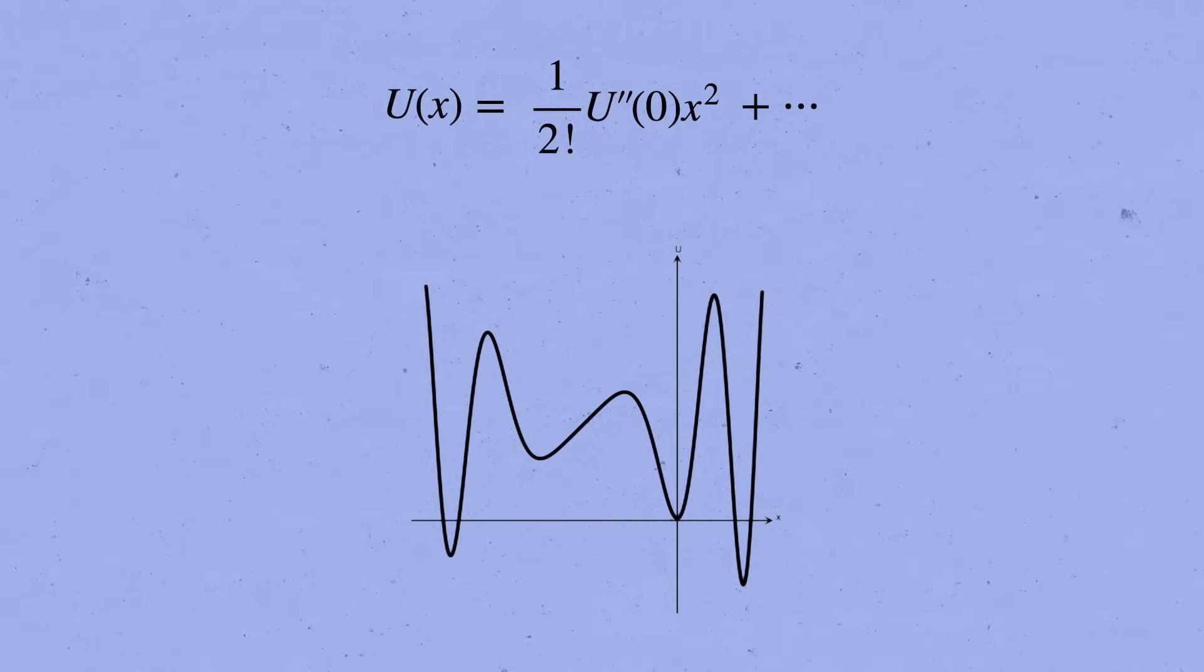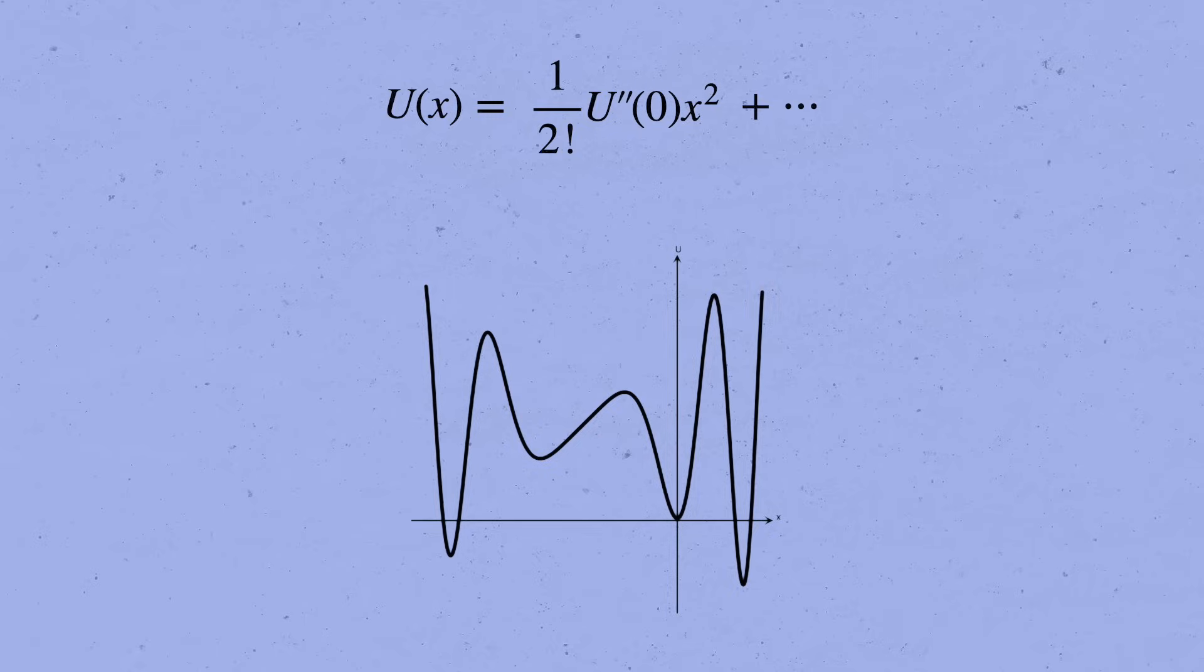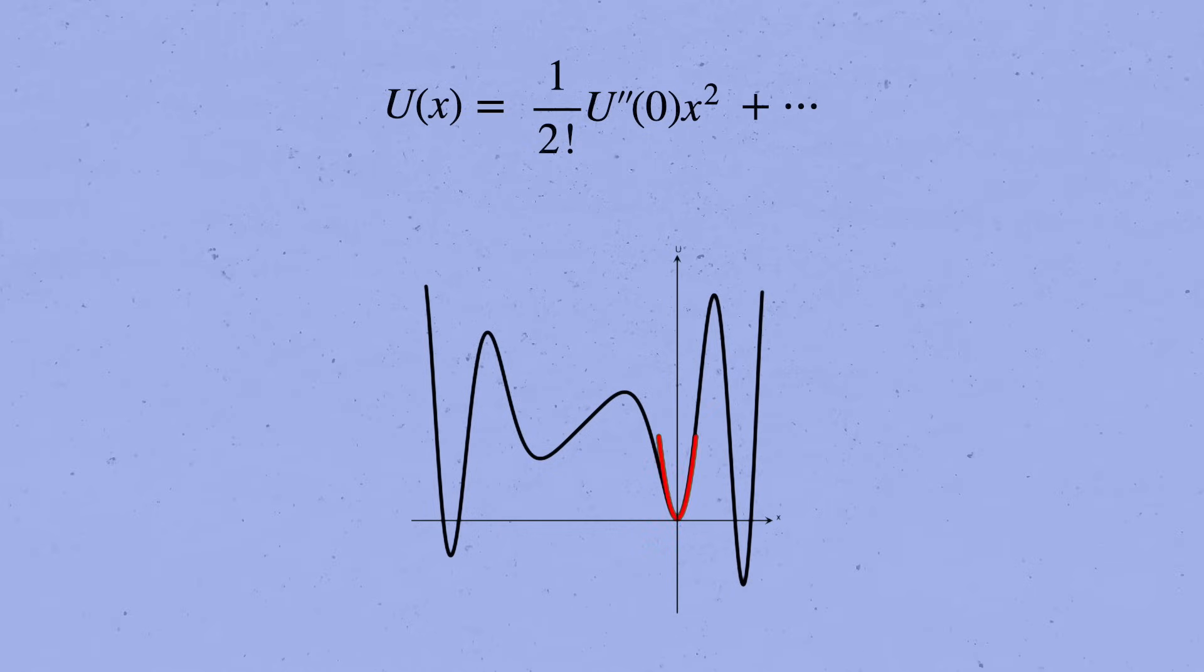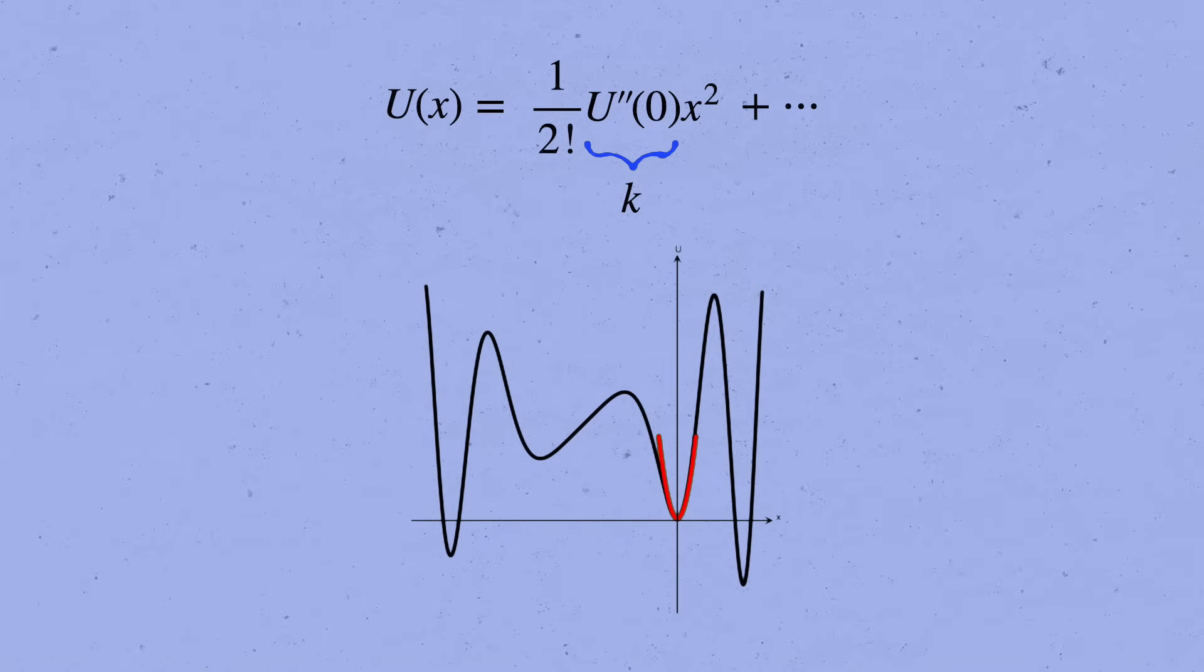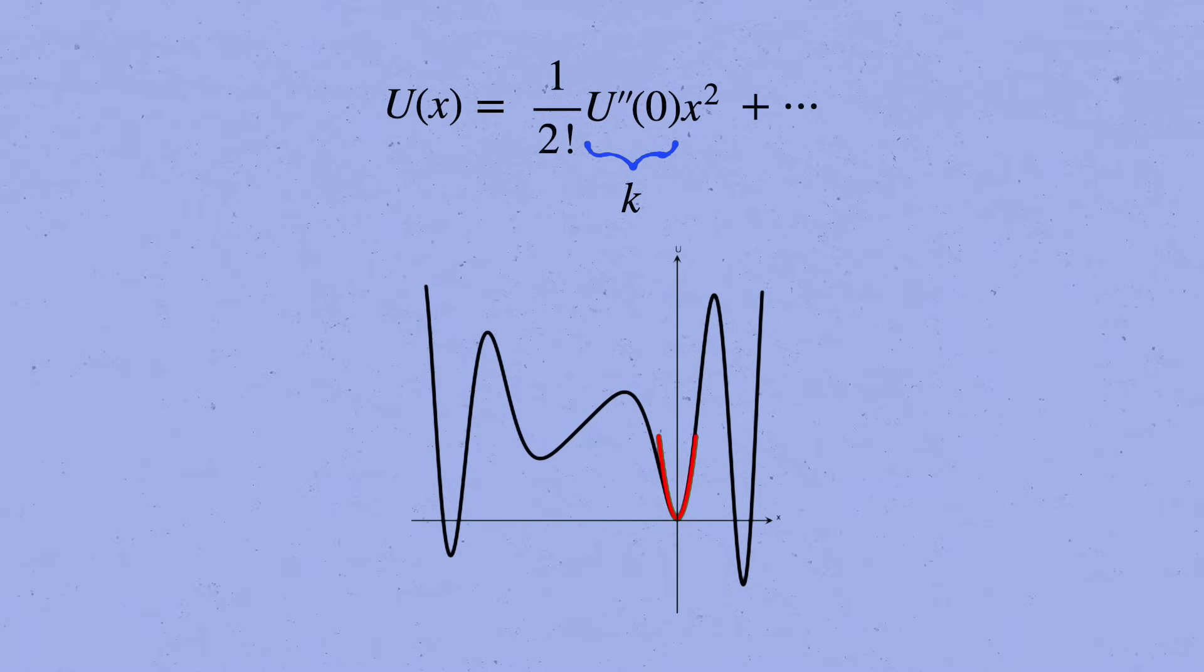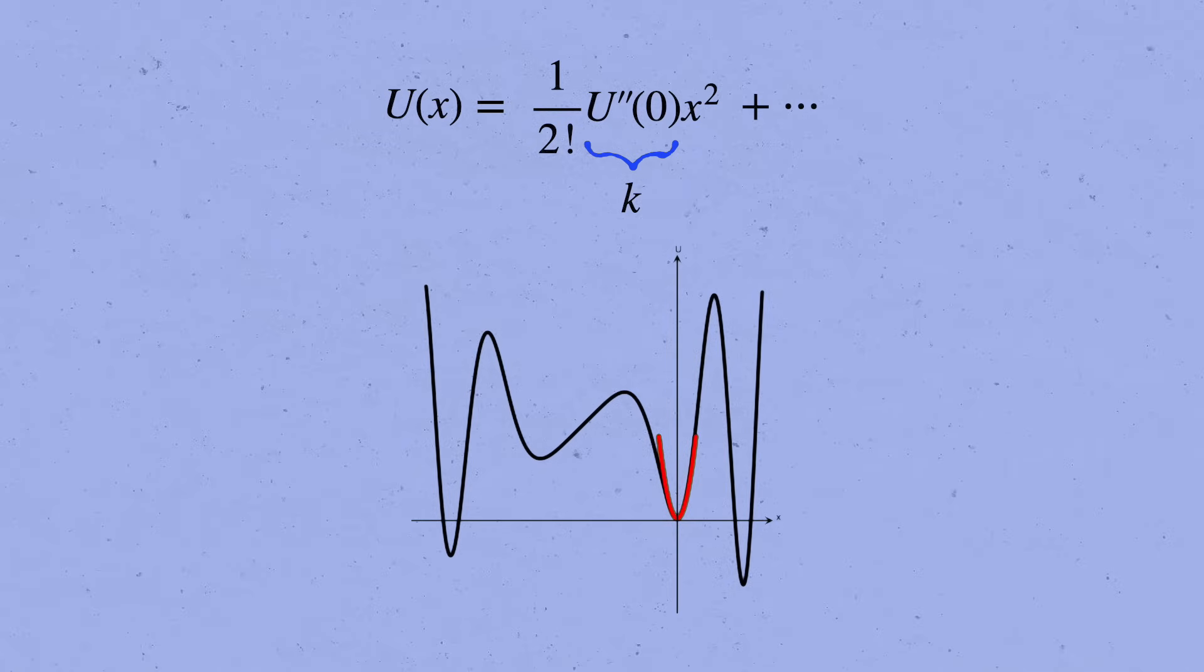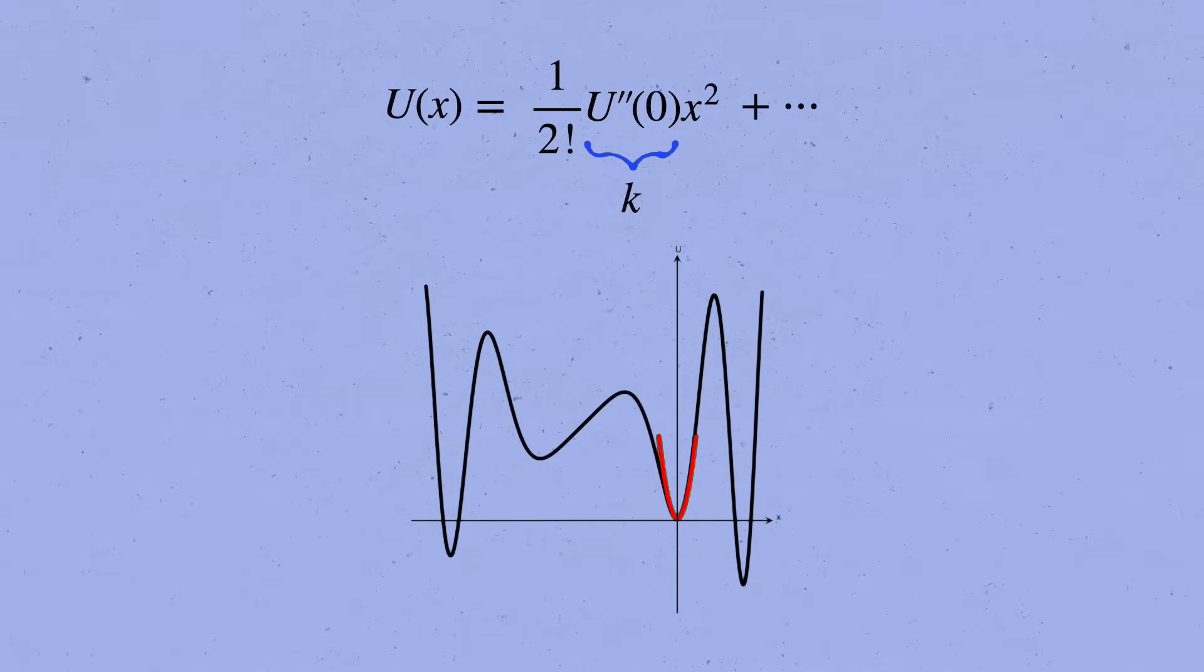u of x equals one-half times u double prime of zero x squared. But that's the potential energy of a spring, with spring constant k equals u double prime of zero. And that's the point. Almost any potential energy function, however complicated, reduces to the simple harmonic oscillator potential in the neighborhood of its stable equilibrium points. This is why the simple harmonic oscillator is so prevalent. Systems tend to settle into stable equilibrium, and small disturbances make them oscillate around it. So the first thing we should do with any potential energy function is find its stable equilibrium points, and then ask what happens when we perturb slightly away from them.